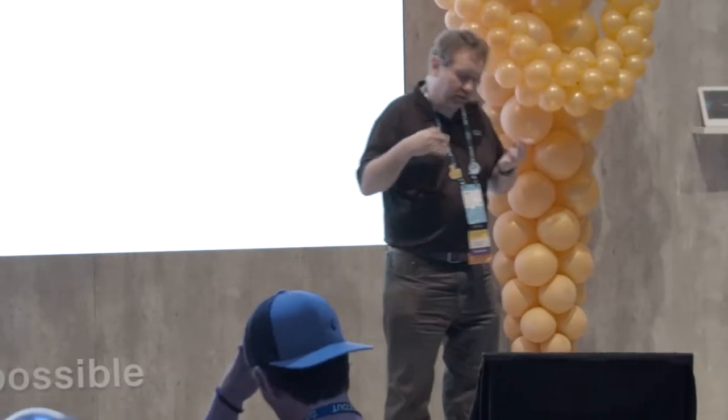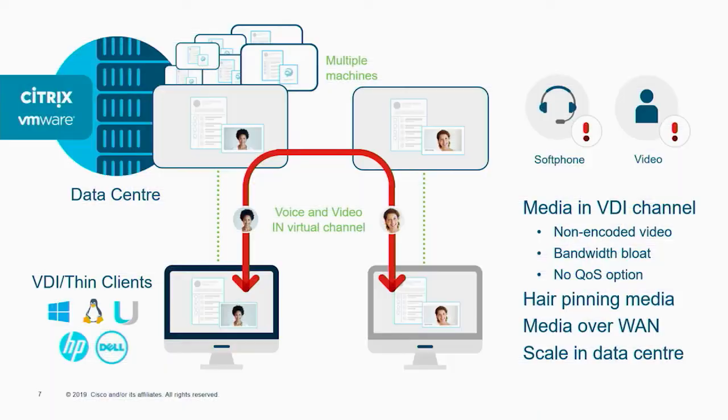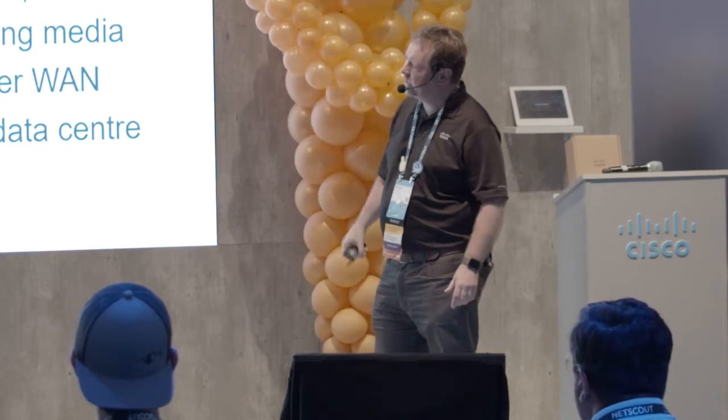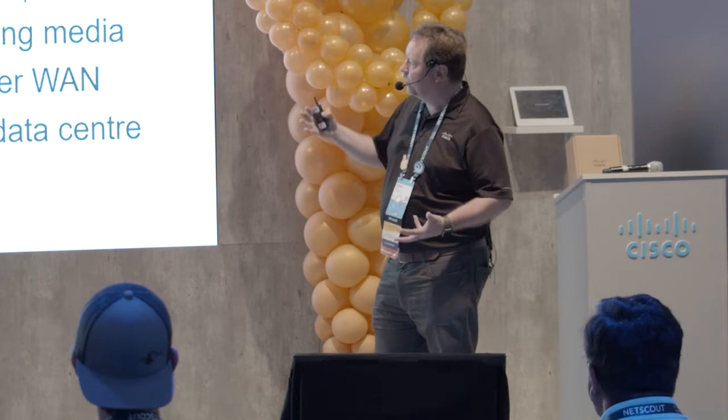Now, this may work in a proof of concept environment where you've got just one or two users doing that. But if you actually start scaling it up, which you typically do within a virtualized environment, and you've got multiple machines, that actually means you've got a lot of traffic going up to the data center. Some of the issues with putting that media within the VDI channel means that the video you're sending in there may not be encoded.